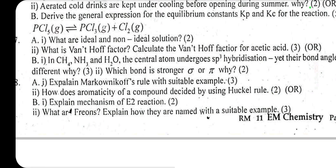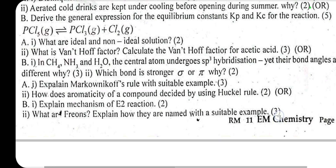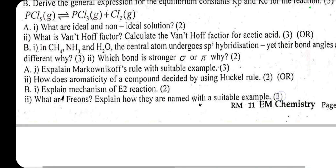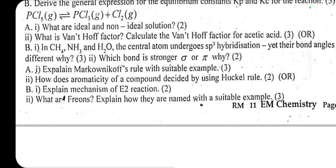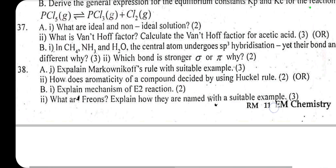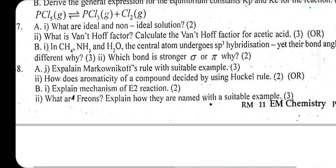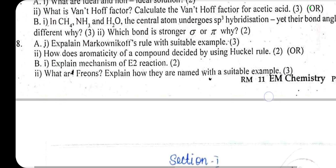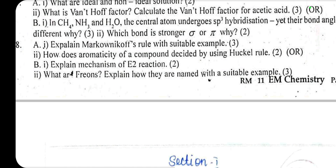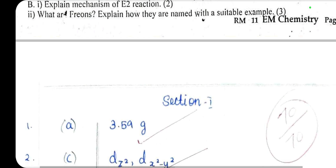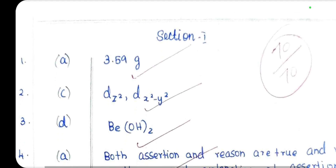In methane, ammonia, and water, the central atom undergoes SP3 hybridization, yet their bond angles are different — explain (3 marks). Which bond is stronger, sigma or pi, and why? Markovnikov's rule with a suitable example. How is aromaticity of a compound decided by Hückel's rule? Explain the mechanism of E2 reaction. What are Freons? Explain how they are named with a suitable example. The answer is 70 out of 70.